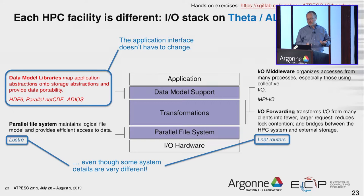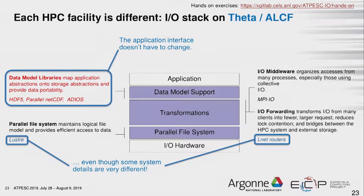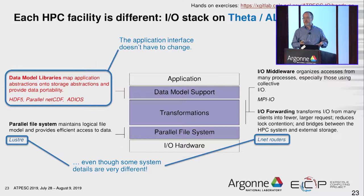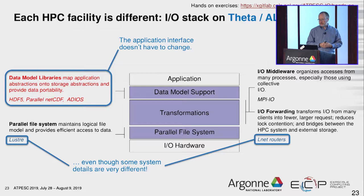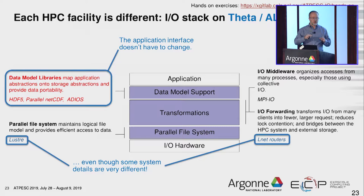If you go to a different system — like Theta, also at Argonne — things are different even though it's at the same place. The IBM CIOD is gone and instead you have something called an LNET router. You have an entirely different file system called Lustre, and different hardware. But really the top part hasn't changed — it's still HDF5, Parallel NetCDF, and other libraries. So if you use those, they're working to make things work right regardless of what stack is underneath. We'll try to encourage you to pick those common tools when possible.